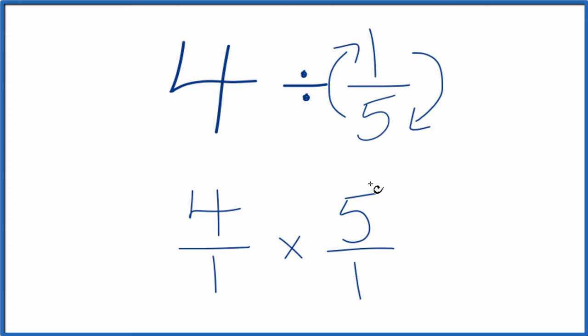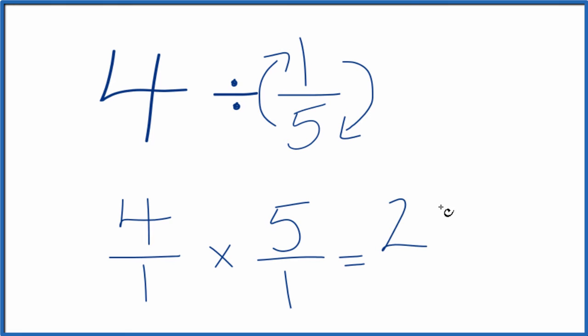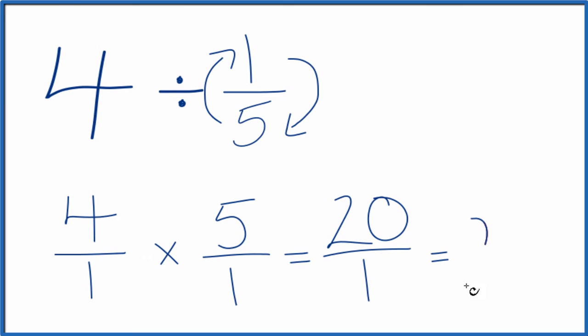Now with fractions, when we multiply, we multiply the numerators, then the denominators. We have our answer. 4 times 5, that's 20. 1 times 1 is 1, and 20 over 1, that's just 20.